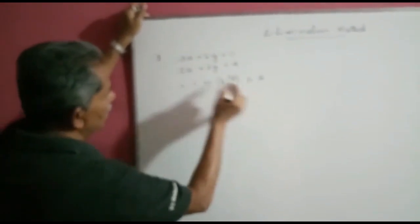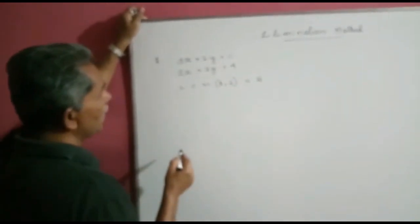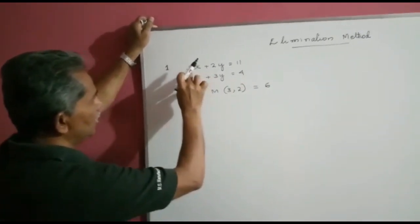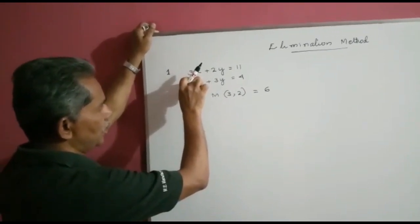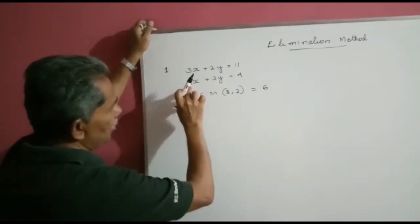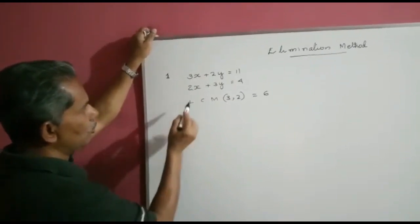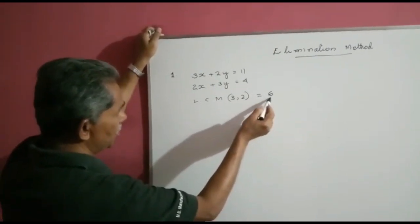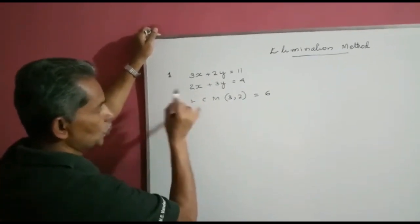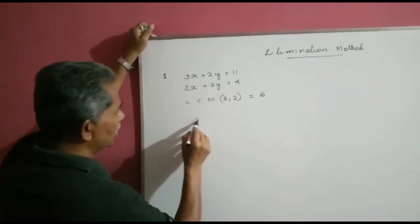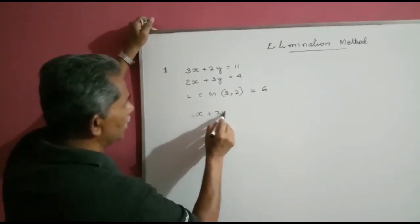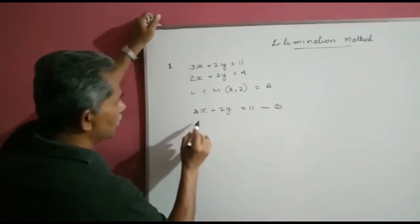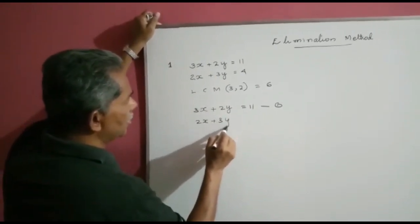To make the coefficient of x equal to 6, we multiply the first equation by 2 — obtained by dividing 6 by the coefficient of x from the first equation. We make the coefficient of x in the second equation equal to 6 by multiplying by 3, obtained by dividing 6 by the coefficient of x, which is 2. So, equation 1 is 3x plus 2y equals 11, and equation 2 is 2x plus 3y equals 4.